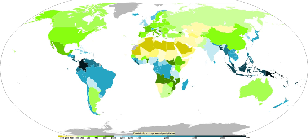Precipitation occurs when a portion of the atmosphere becomes saturated with water vapor, so that the water condenses and precipitates. Fog and mist are not precipitation but suspensions, because the water vapor does not condense sufficiently to precipitate.